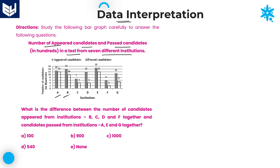The 7 institutions are A, B, C, D, E, F, and G. One column is about appeared candidates, one is about passed candidates. Don't forget that all the values are given in terms of hundreds — so we need to multiply every value with 100. For example, if it shows 11, that indicates 1100. The given information is very clear and easy to understand.